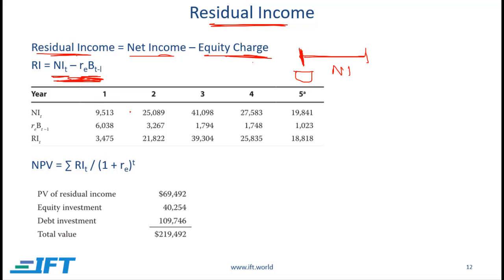If in year one we have a given net income and this is the equity charge — cost of equity times the book value at the start of the year — the difference of these two numbers gives us the residual income. One way of calculating the NPV of a project is to take all these residual income numbers and compute the present value.